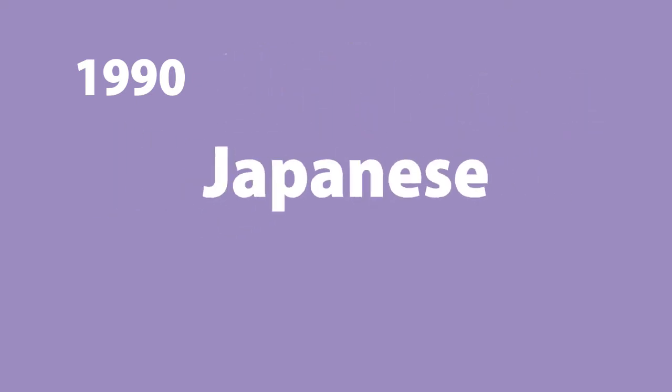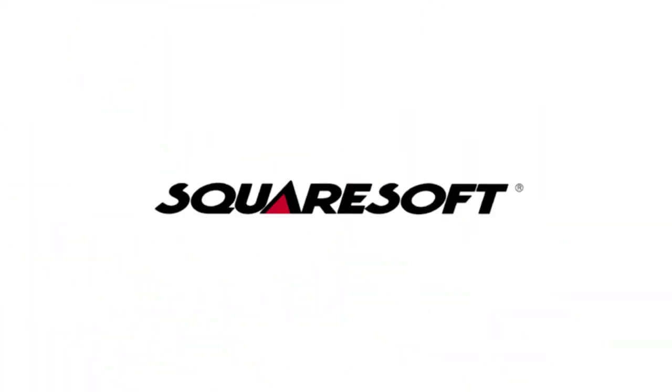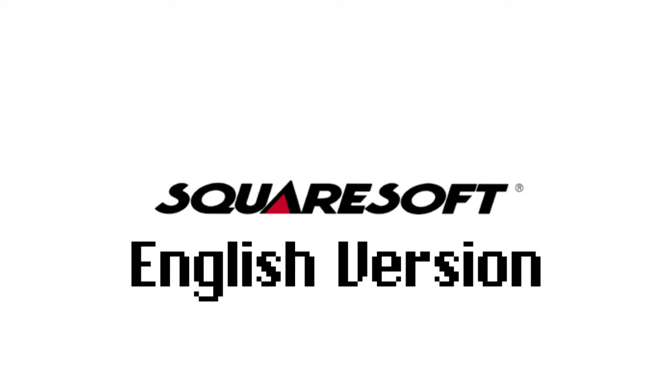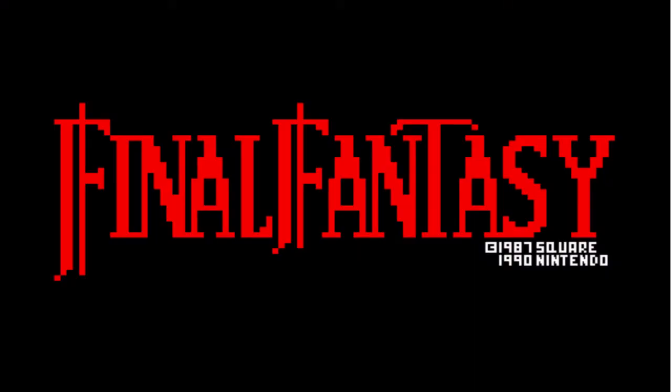In the 90s, the Chicago pixel typeface was adapted by the Japanese video game company Squaresoft for use in the English versions of their popular video games.